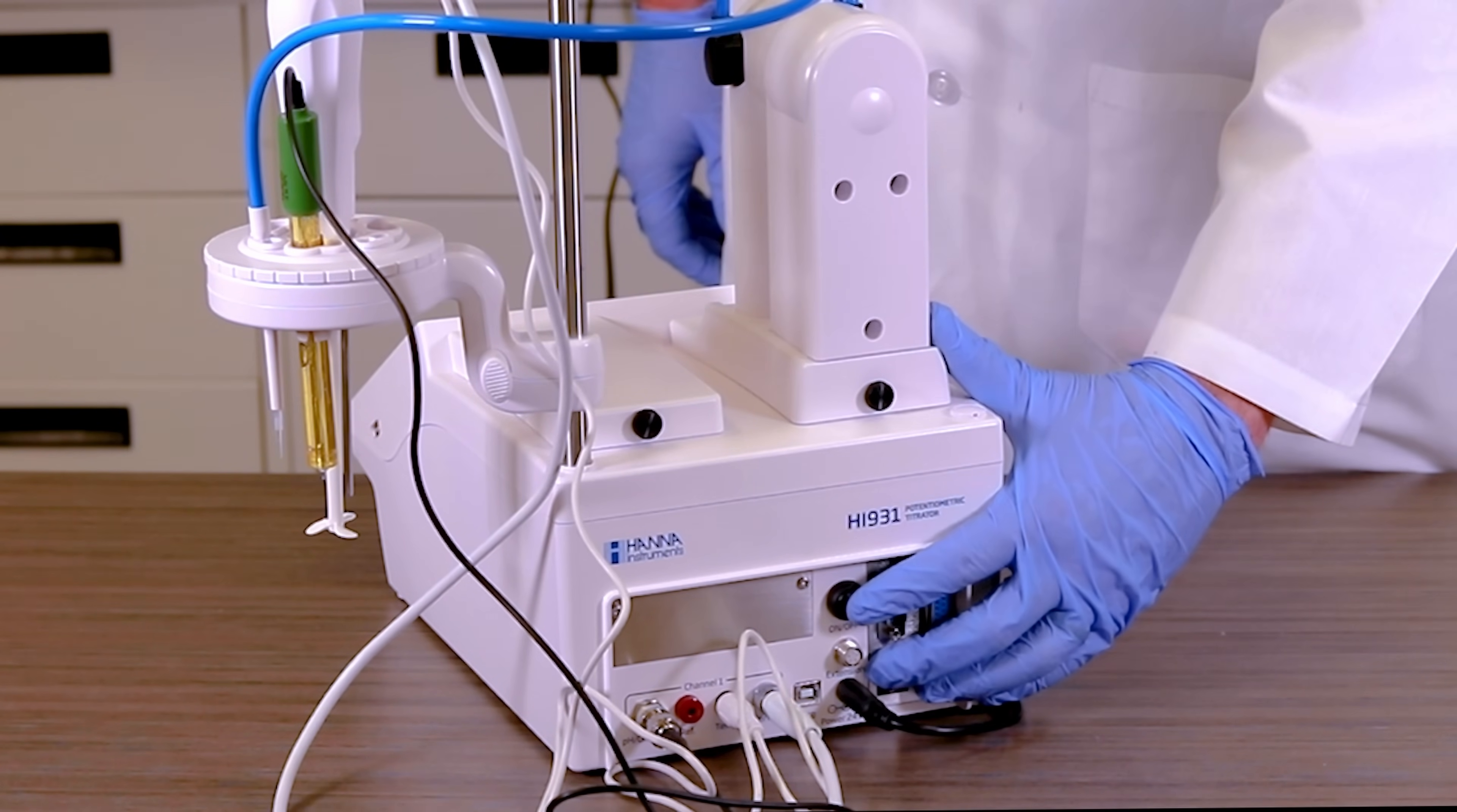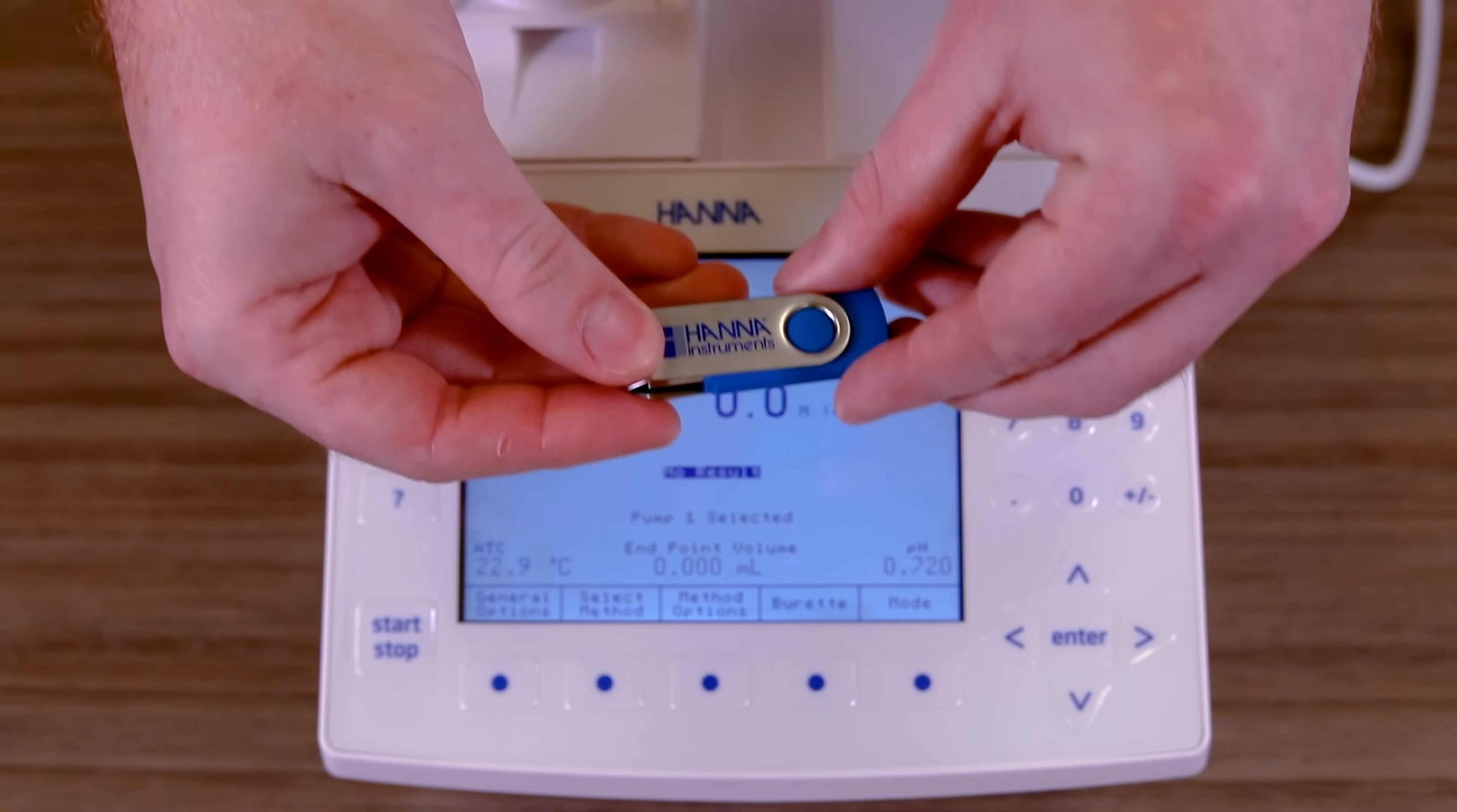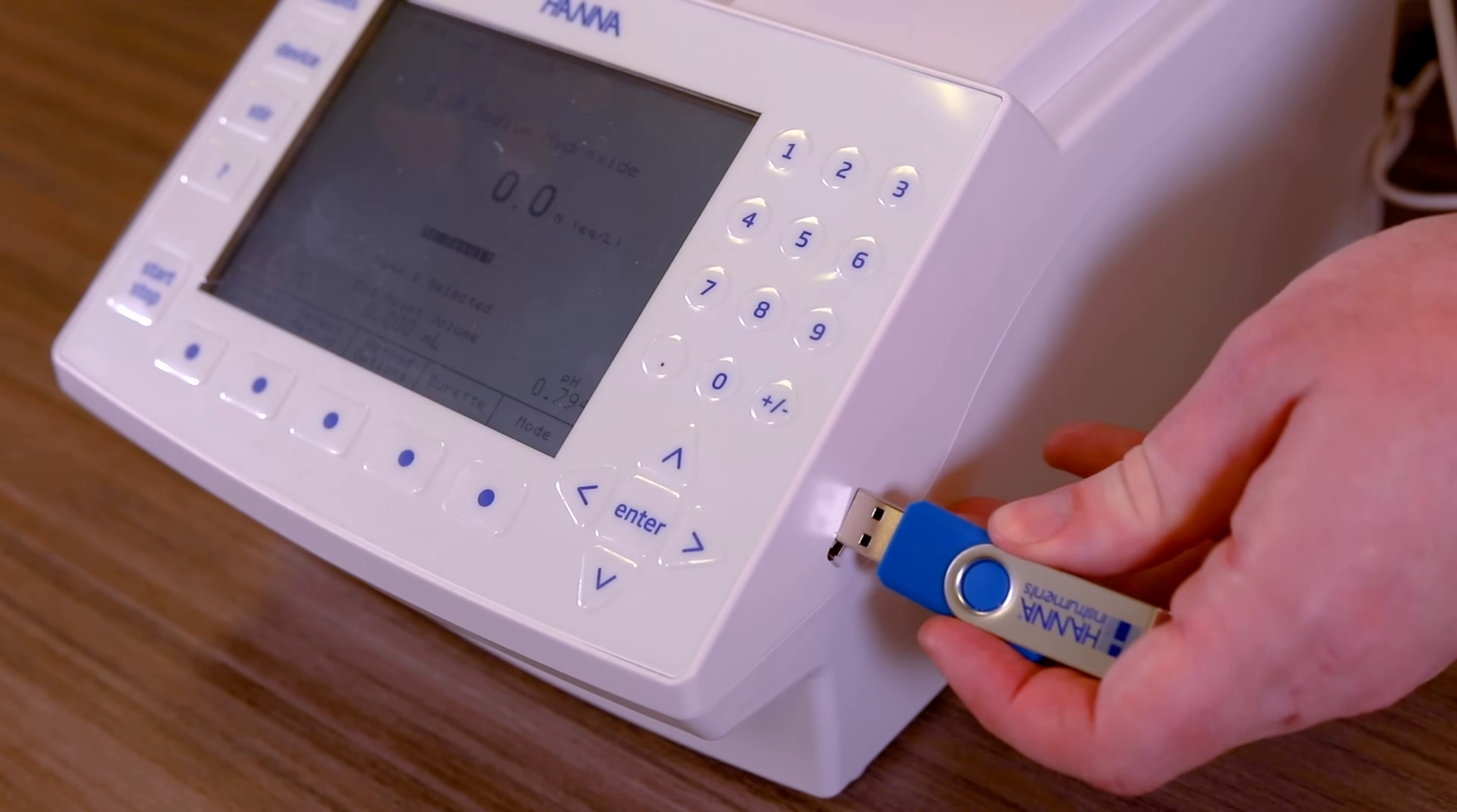Press the power button located on the back of your titrator to power on the unit. Your Hanna titrator is now installed and ready for use.